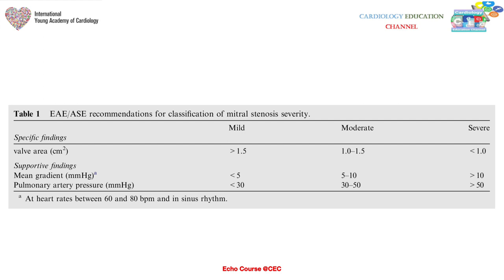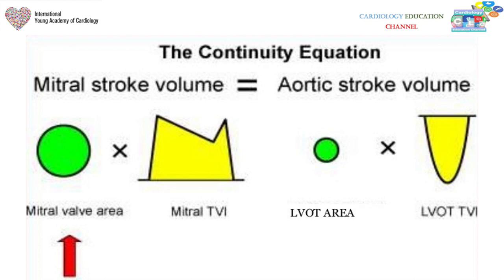Mitral stenosis severity classification: by area — over 1.5 cm² is mild, 1.0 to 1.5 cm² is moderate, less than 1.0 cm² is severe. By mean gradient — less than 5 mmHg is mild, 5 to 10 mmHg is moderate, more than 10 mmHg is severe. The continuity equation can also calculate mitral valve area: MVA = (LVOT area × LVOT VTI) / mitral valve VTI.